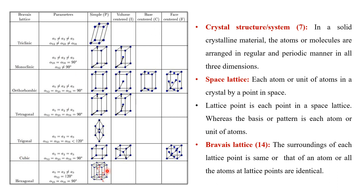Bravais lattice plus basis gives us the crystal structure. Hence there are 14 Bravais lattices and 7 crystal systems. From the table, the seven crystal systems can be identified, and counting the figures on the right-hand side you can see the 14 Bravais lattices. These arise by changing atomic positions in the crystal systems — whether atoms are at edge centers, base centers, face centers, or in a simple arrangement. The cubic system has a = b = c with all angles equal to 90°.